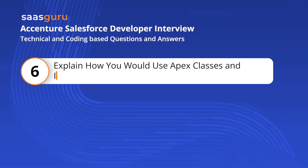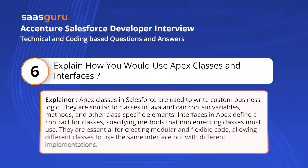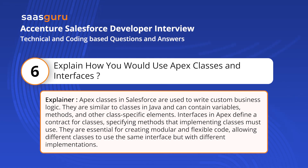Question 6: Explain how you would use Apex classes and interfaces. Apex classes in Salesforce are used to write custom business logic. They are similar to classes in Java and can contain variables, methods, and other class-specific elements. Interfaces in Apex define a contract for classes, specifying methods that implementing classes must use. They are essential for creating modular and flexible code, allowing different classes to use the same interface but with different implementations.